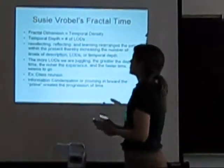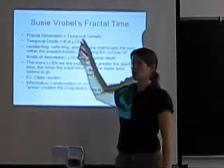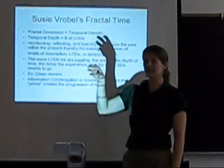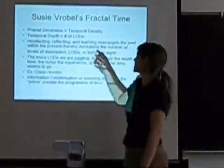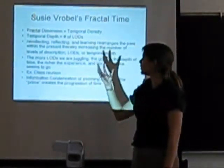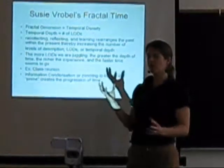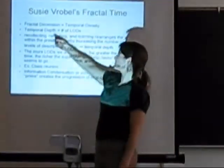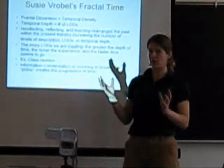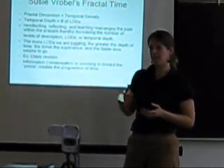In Groble's description of time, the fractal dimension — which is the description of how deep the scale of the fractal goes — is the same as temporal density. And temporal depth is the number of levels of description. These are two ways of describing that zoom, how far you can zoom in.